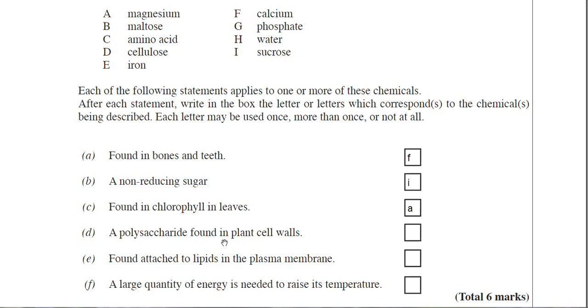A polysaccharide found in plant cell walls. There's only one polysaccharide in the list and that is cellulose. Now remember cellulose is a carbohydrate and there are two other carbohydrates actually in the list. Maltose is a carbohydrate and sucrose is a carbohydrate. But cellulose is the only polysaccharide in the list. So that's our answer and it's letter D.